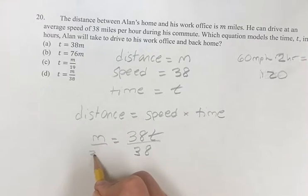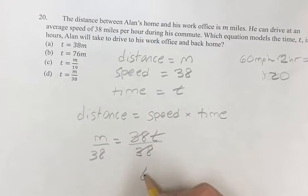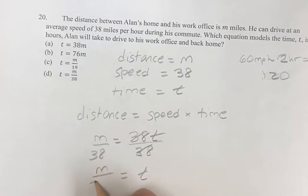So what we can do with that is divide by 38. t is equal to m over 38.